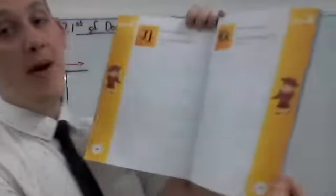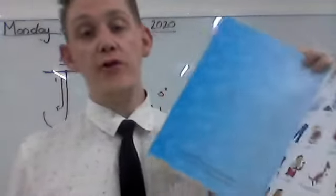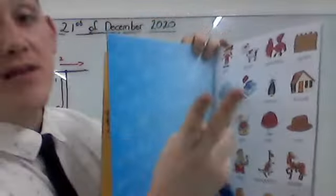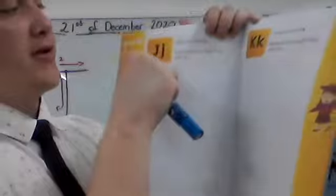And then in the back of your book, over here, you are going to look for the letters that start with letter J. Go look for the letter J words, then cut them out and paste them under the letter J.